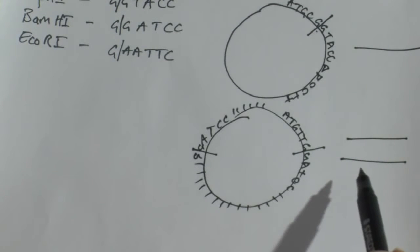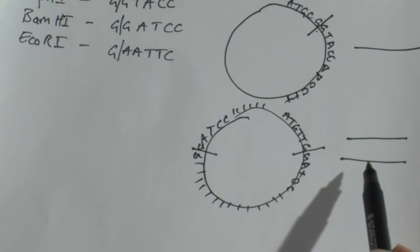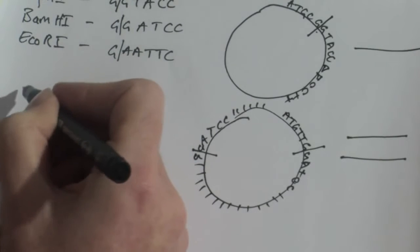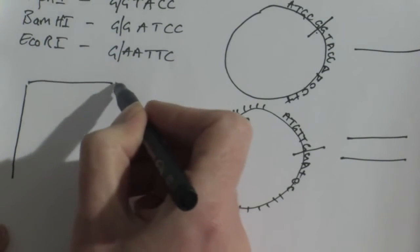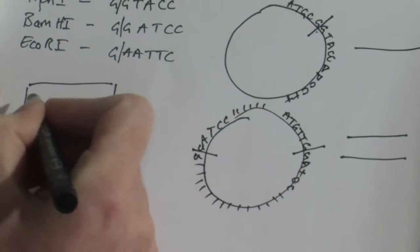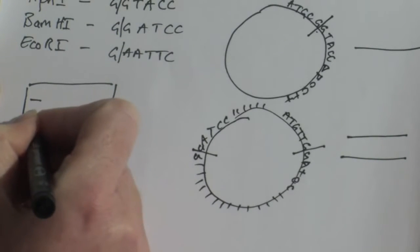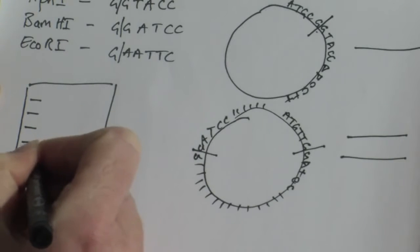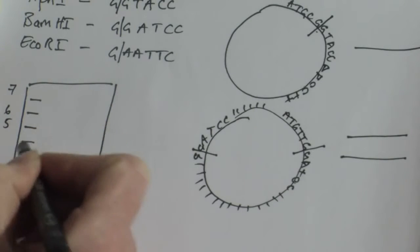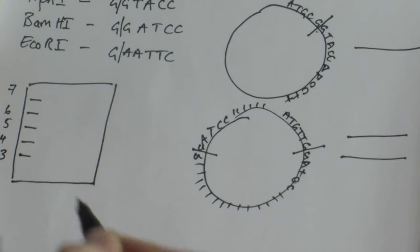I have no way of knowing how many fragments I have produced or what size, what molecular weight those fragments of DNA have until I have run them out on an agarose gel. If I was looking at an agarose gel here, and let's imagine we've got molecular weight markers coming down here. Let's say this is 7kb, 6, 5, 4, 3kb.